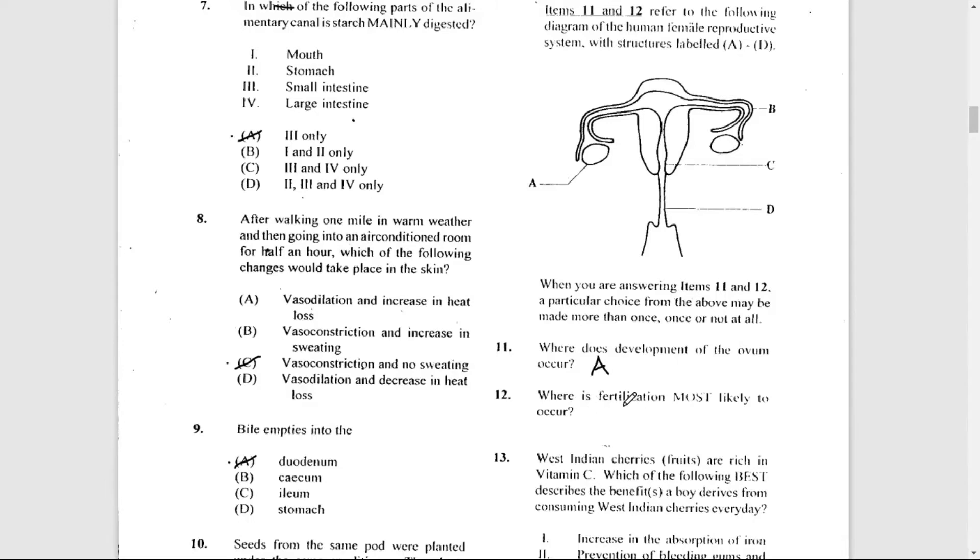Number 12: Where is fertilization most likely to occur? Fertilization occurs here—that's the fallopian tube. So that's B, and that specific part of the fallopian tube is the ampulla of the fallopian tube.